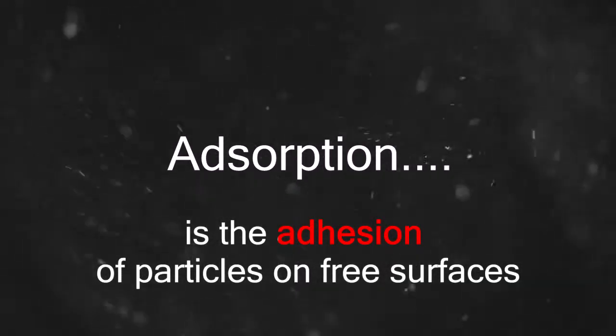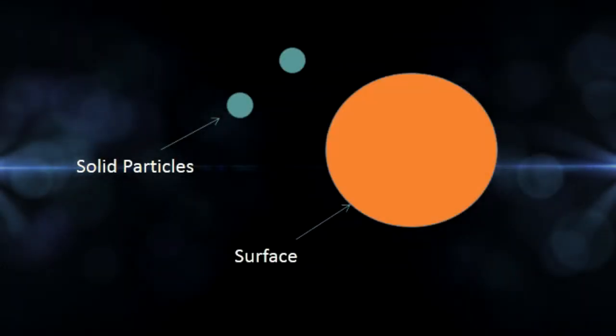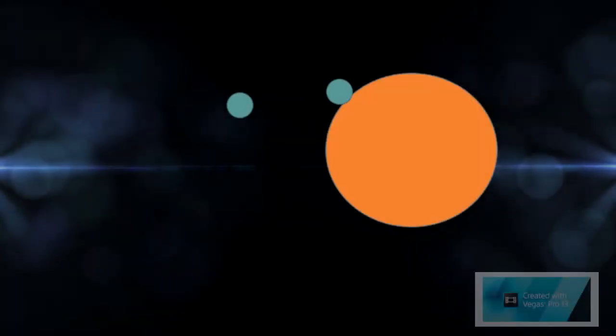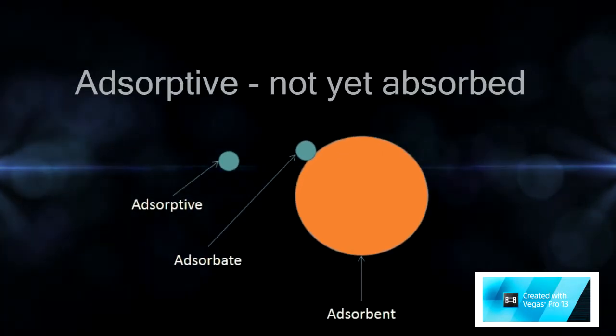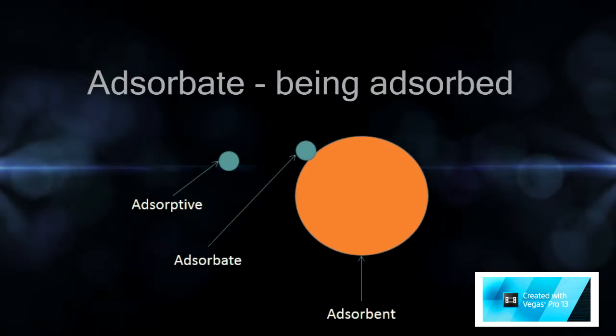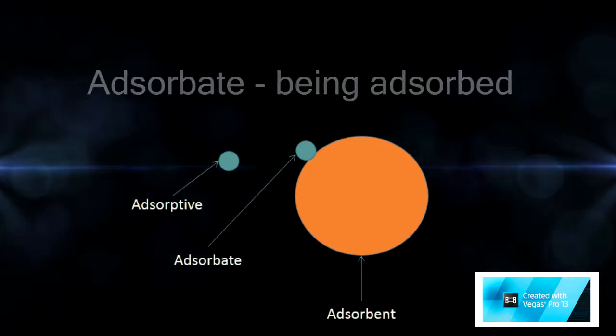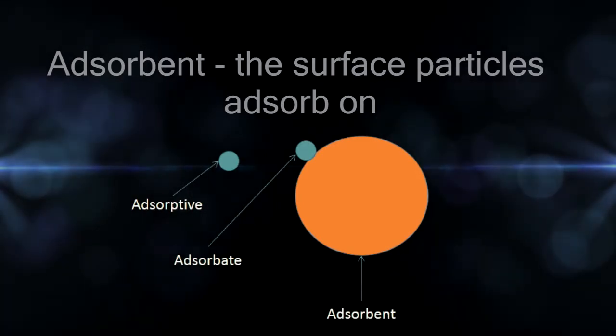Adsorption is the sticking of particles onto free surfaces. The adsorptive is the molecule yet to be adsorbed. The adsorbate is the particle being adsorbed. The adsorbent is the surface on which the particles adsorb on.